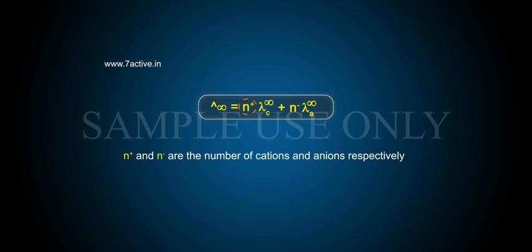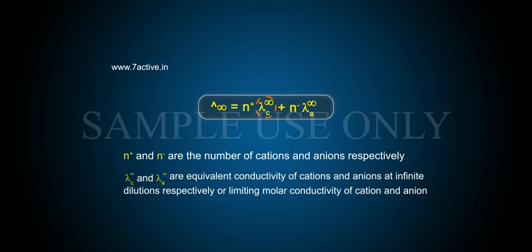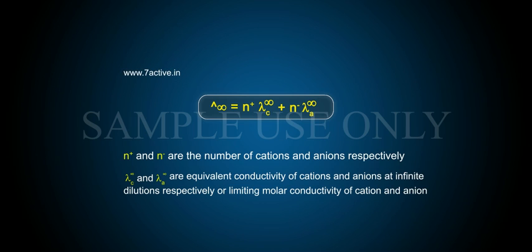Where n⁺ and n⁻ are the number of cations and anions respectively, and λ_c∞ and λ_a∞ are the equivalent conductivity of cations and anions at infinite dilution respectively, also called the limiting molar conductivity of the cation and anion.